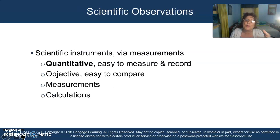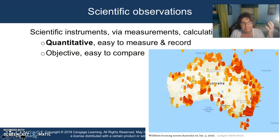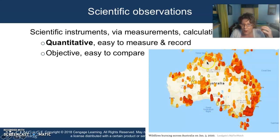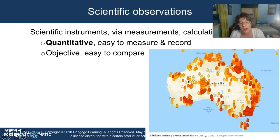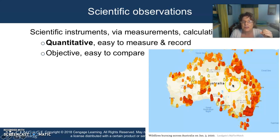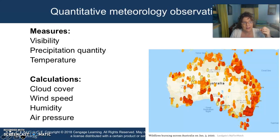We really do need to use scientific instruments for that quantitative, objective measure, and we might make calculations out of those measures. Going back to data analysis, from those wildfires across Australia, we can gather data and make calculations to visualize them well. So we can try to make this quantitative, unemotional data into something that looks more visual and emotional. That's a way that we can manipulate and analyze the data.